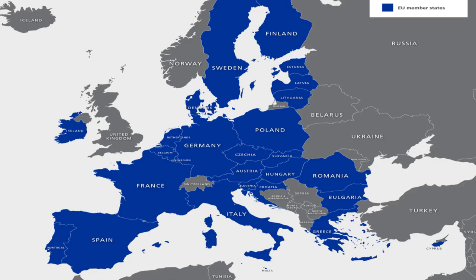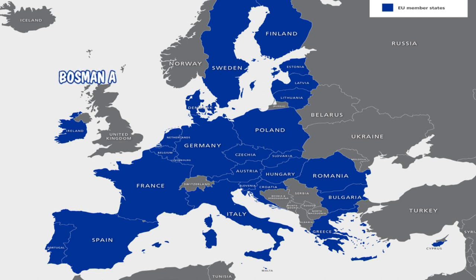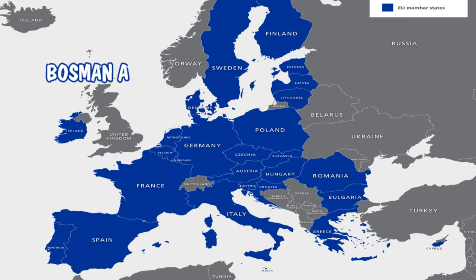All of the countries shown in blue are Bosman A countries, meaning that you can flow from one country to another. Say you were French and got an offer in a German league — you would not be counted as an import player. You're counted as an EU Bosman A player, which has more spots and is less regulated. This is important because there are import regulations — a league may only allow one or two imports, and this way you do not take up one of those spots.